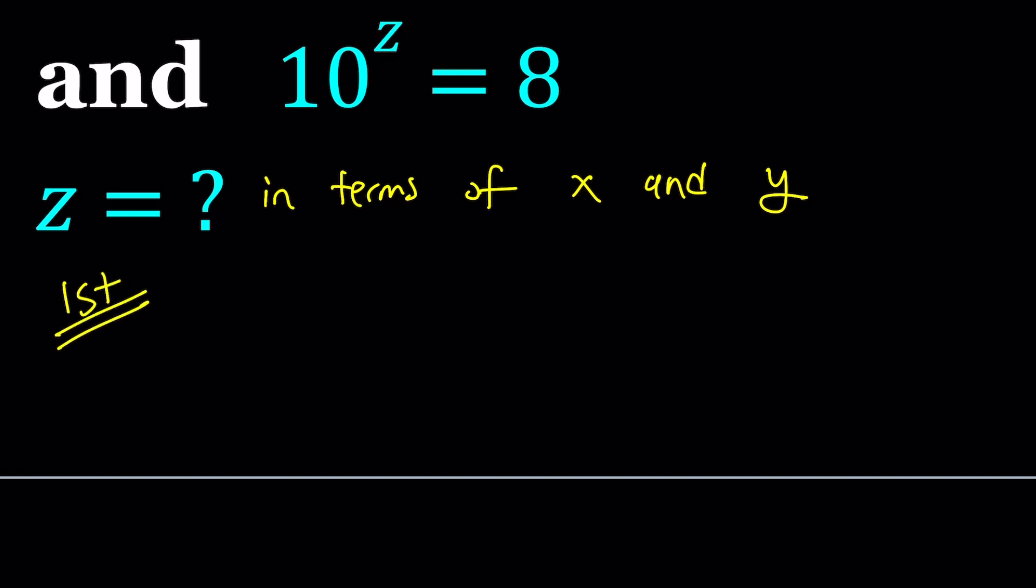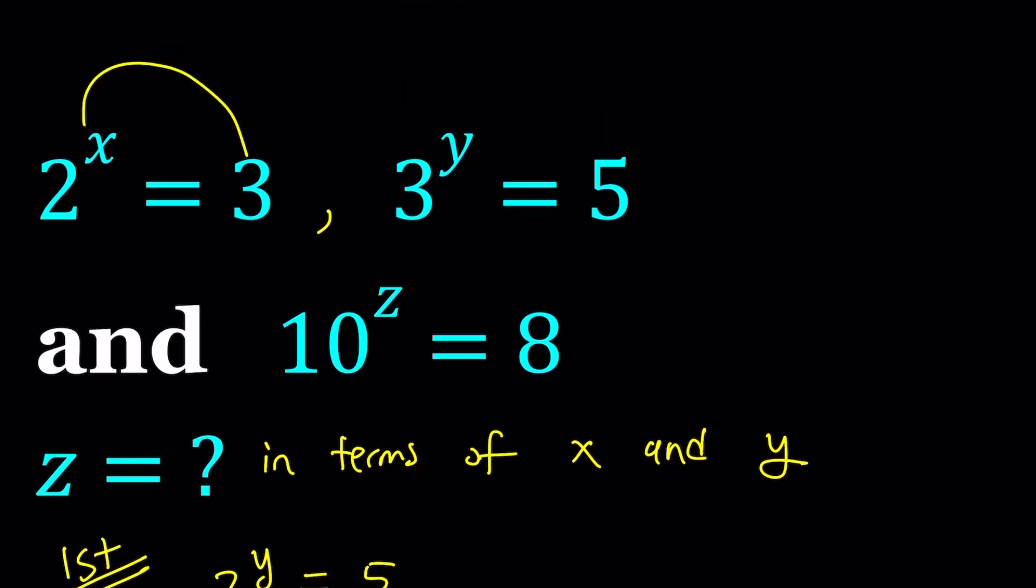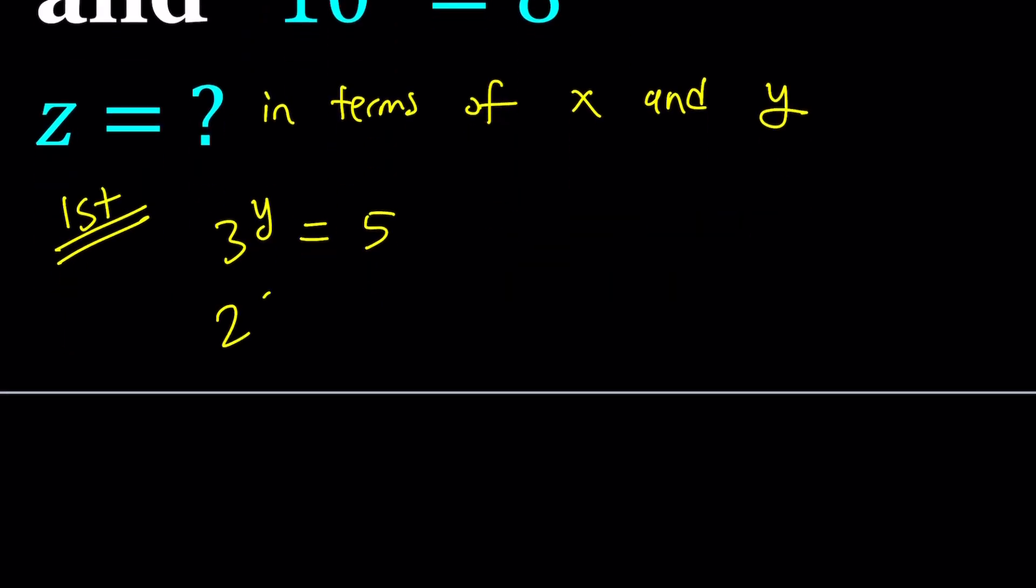For my first method, I'm going to do the following. First of all, notice that 3 to the power y is equal to 5, and 3 is equal to 2 to the power x. So, I can replace the 3 with 2 to the power x. That gives me something nice, which associates 2 and 5, and also puts the x and y together. So, this gives us 2 to the power xy equals 5.